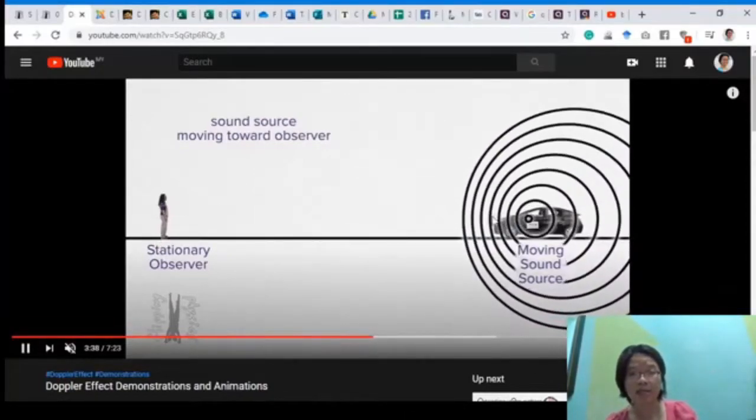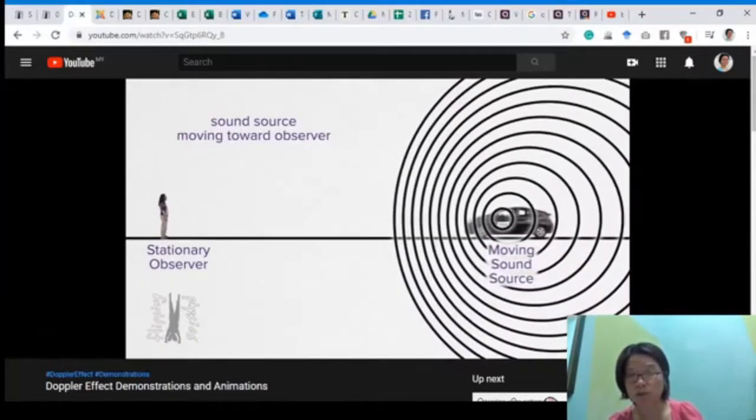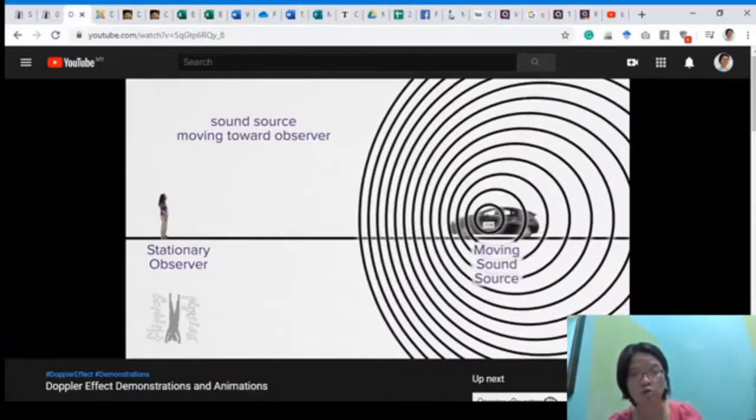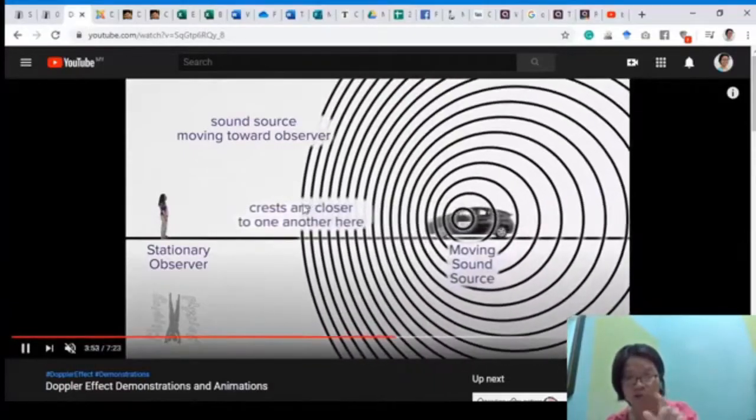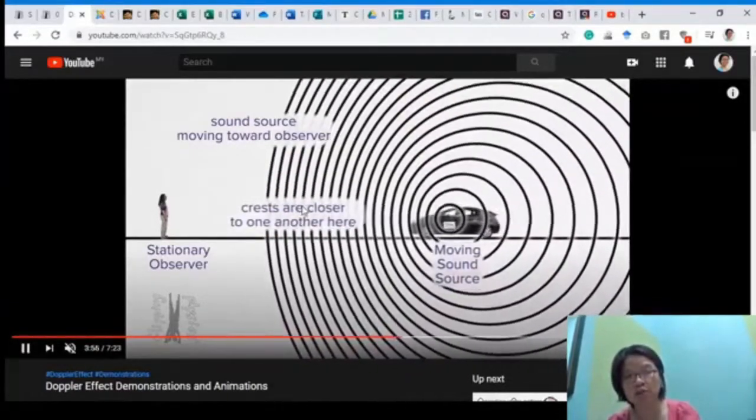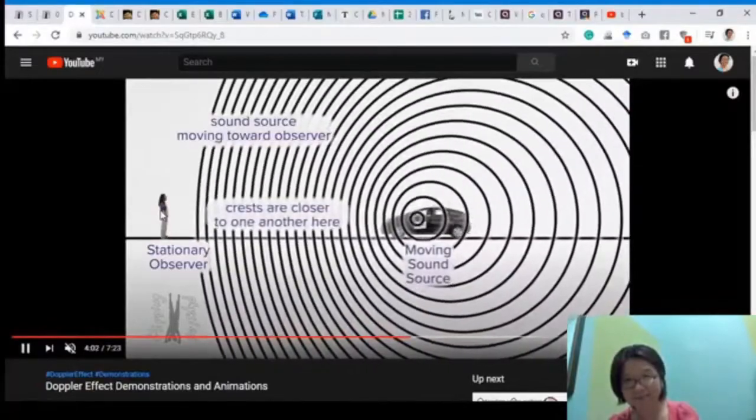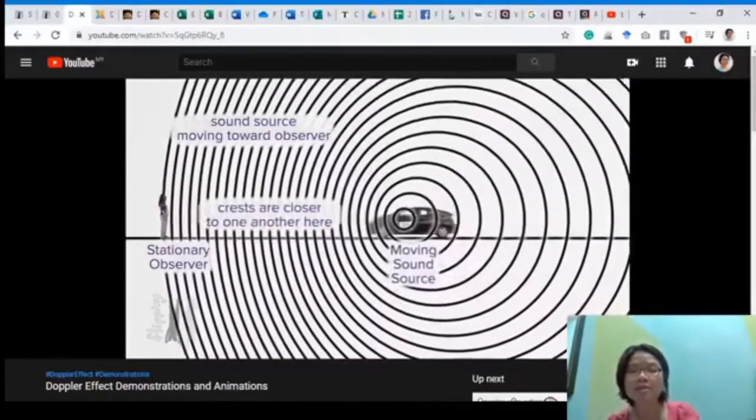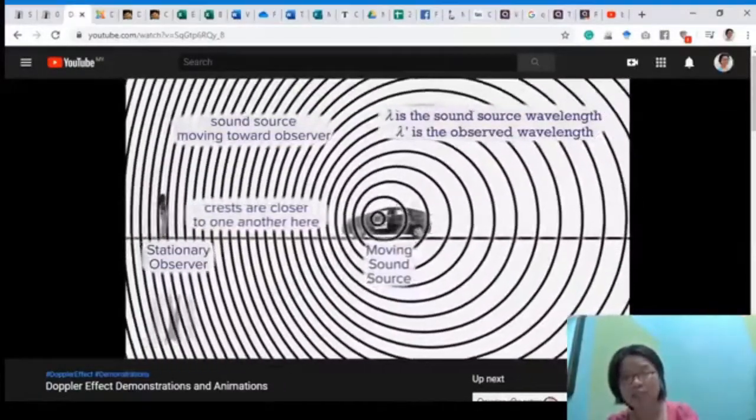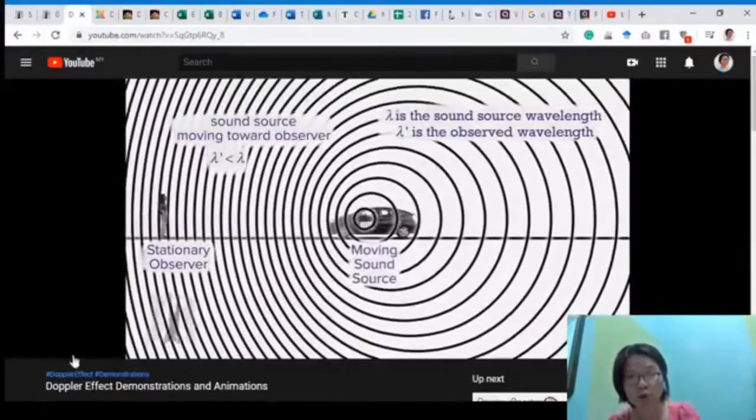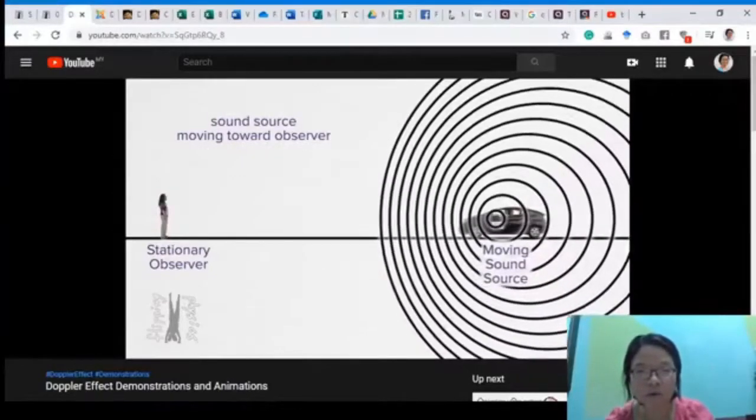So you can see here, as it travels on one side, the wave is squished together. So if let's say I'm standing and the car is driving towards me, the sound source is moving towards the observer. I am the observer. The car horn is the sound source. So I will be able to observe that the crest right now, drawing to represent, crests are closer to each other here. If the crest is closer, this means that the wavelength is less. If the wavelength is less, because the speed of sound is constant, then the frequency you hear is higher. You will hear a higher pitch.